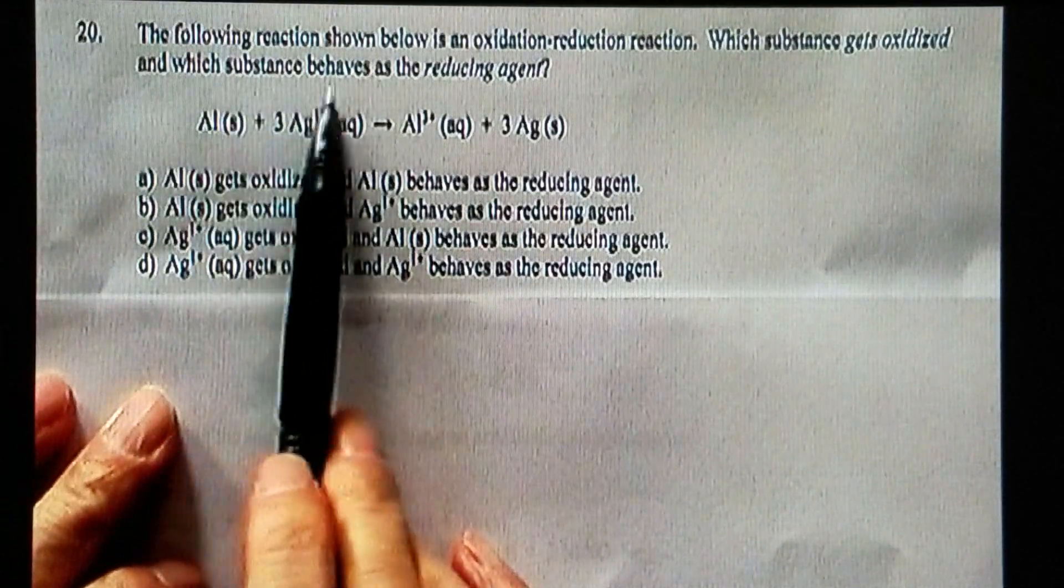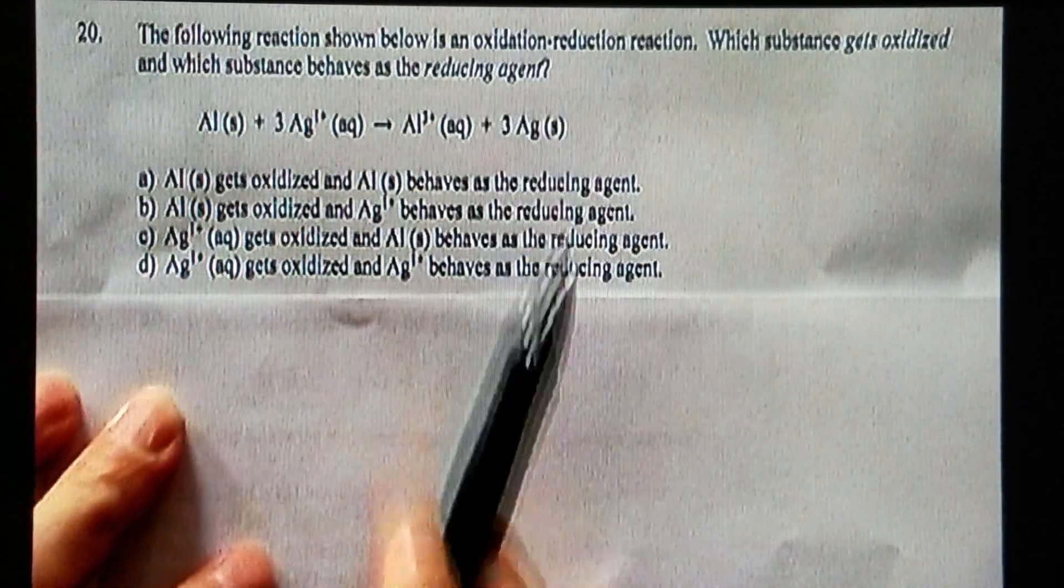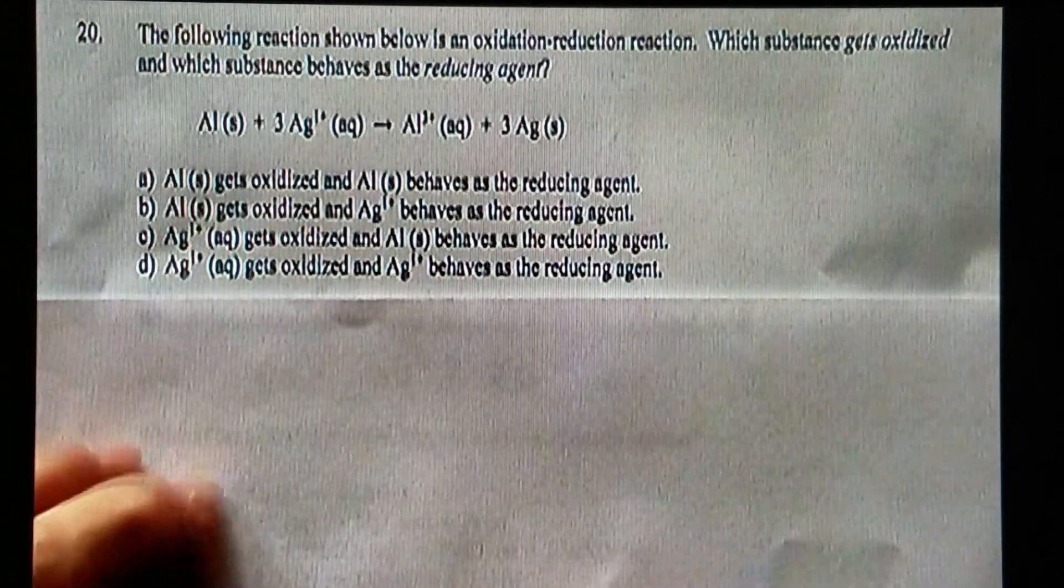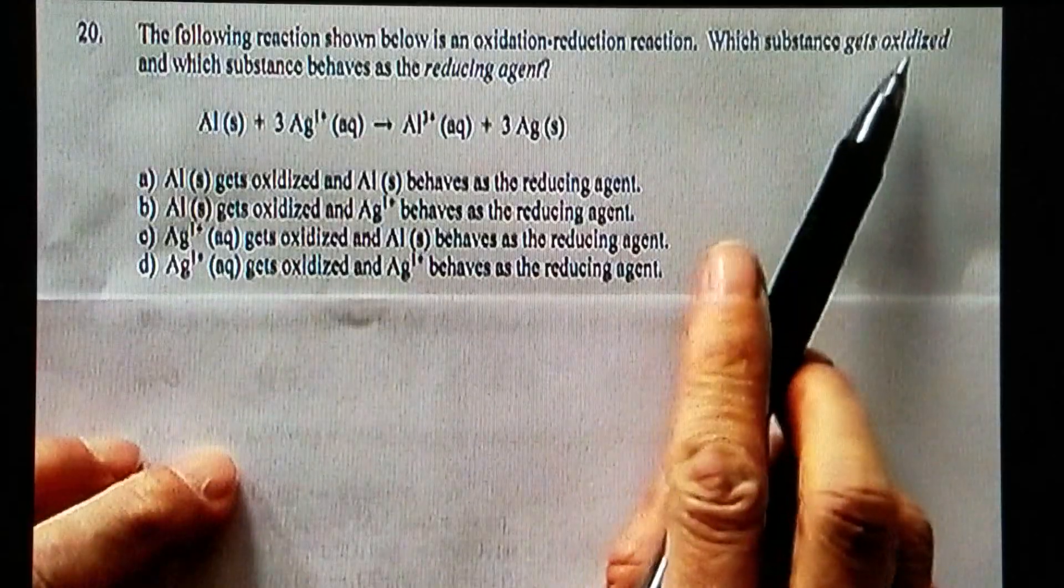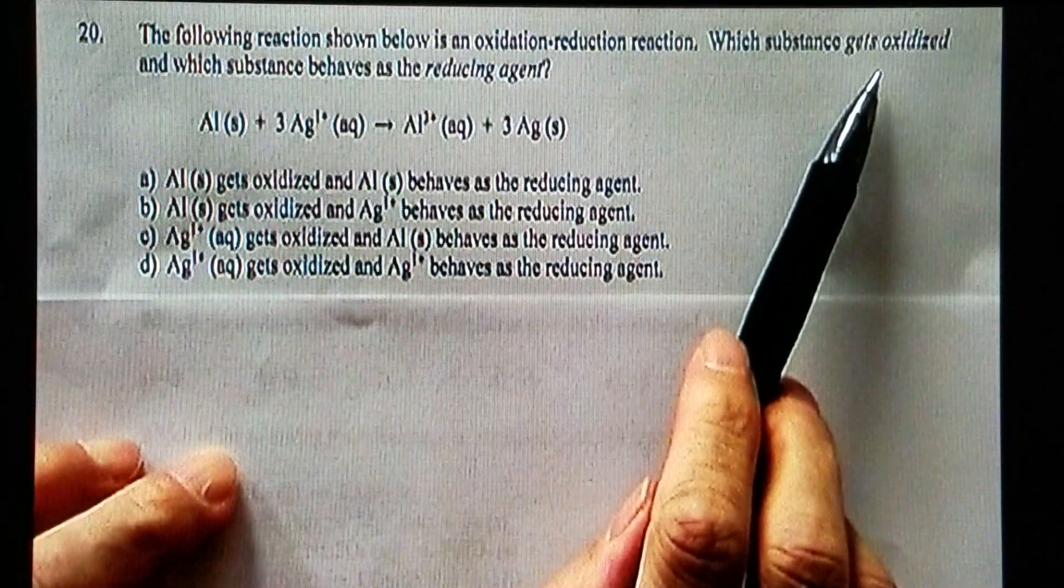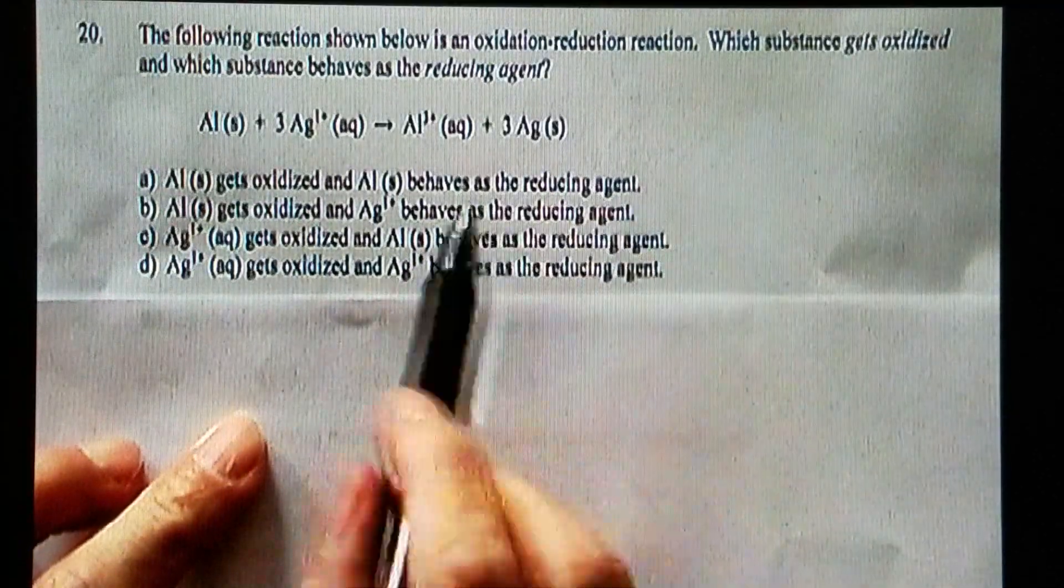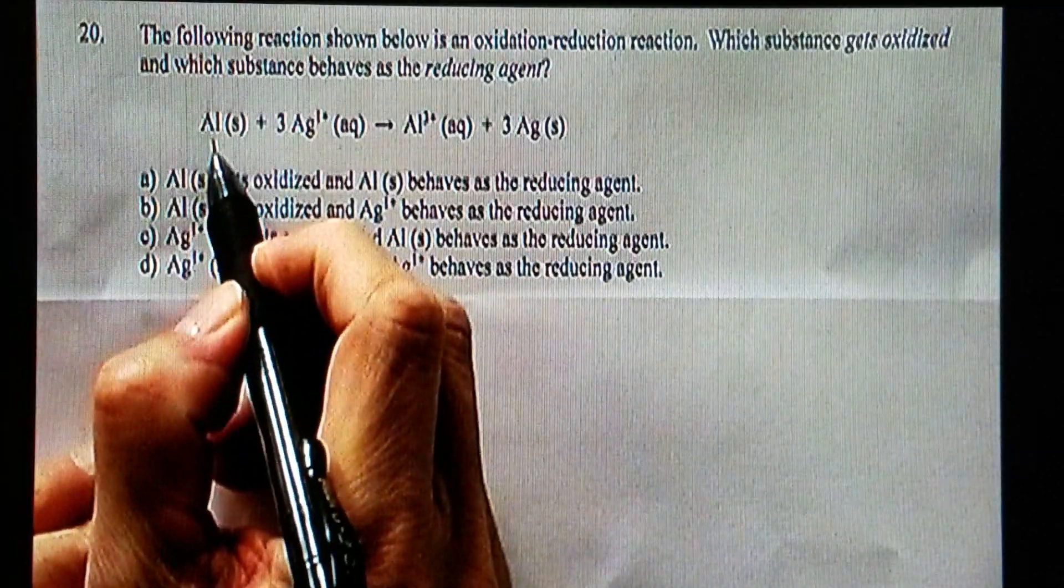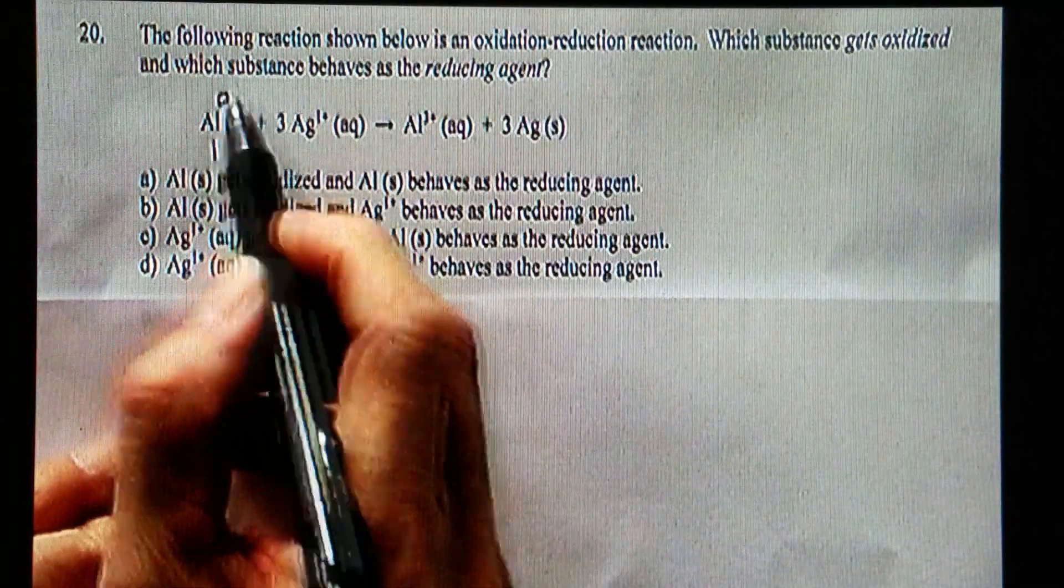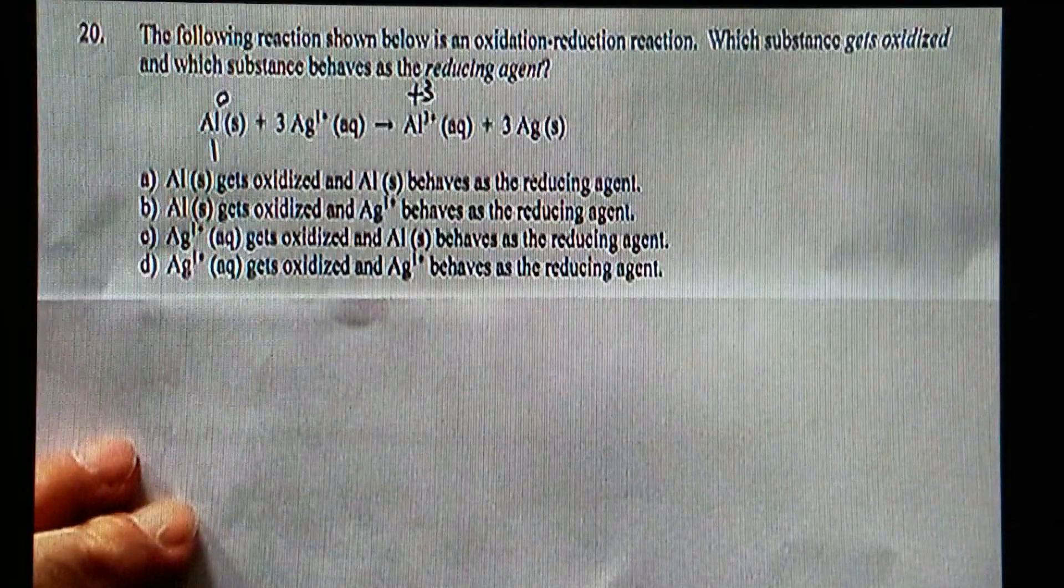And then which substances behaves as a reducing agent? So in order to determine which one gets oxidized, you need to remember oxidation number goes up, then that one gets oxidized. Look at aluminum. Here is a zero oxidation number. Here oxidation number is positive 3.